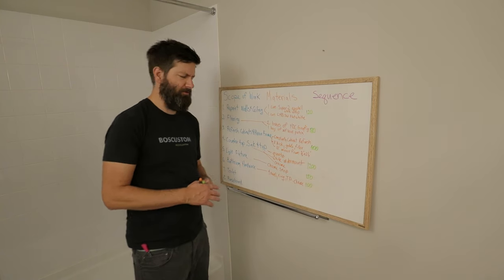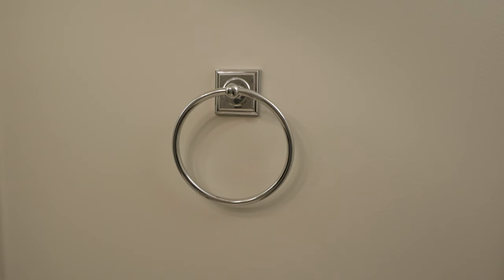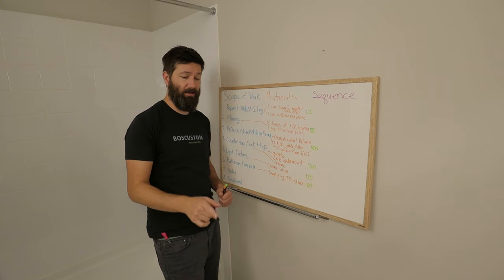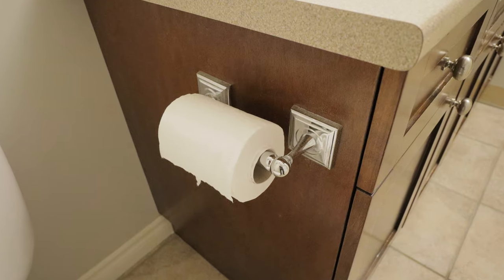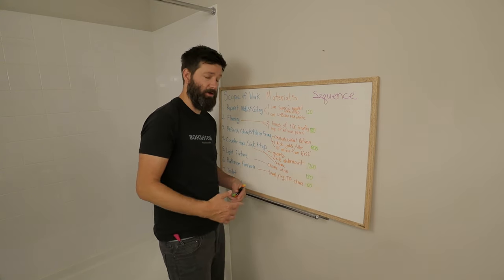For the bathroom hardware, nothing too flashy here. I'm just going to be replacing the towel bar, the little ring that holds hand towels, and the toilet paper holder. I'm going to get that in chrome, more of a modern finish, and I'm going to allow for about a hundred bucks.